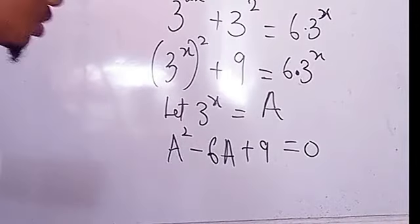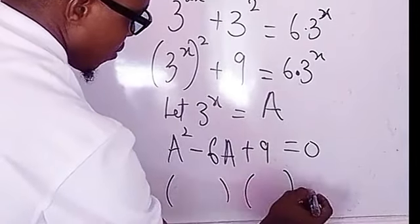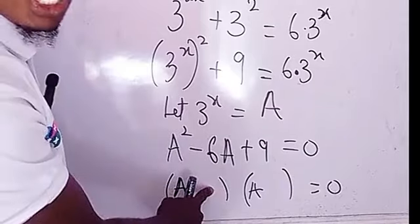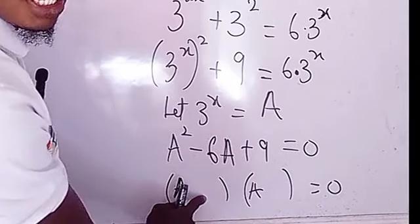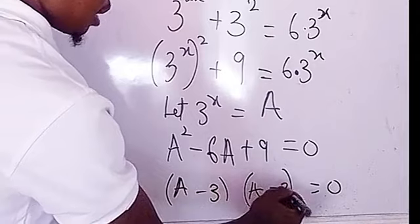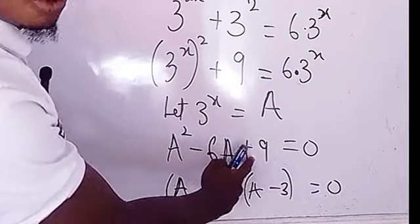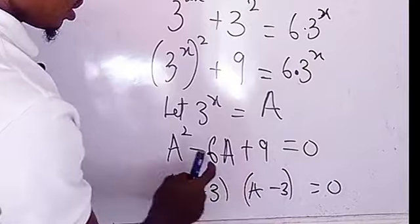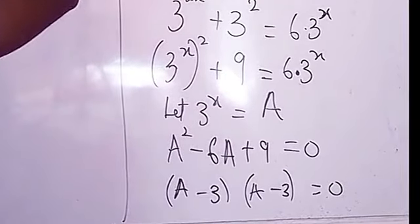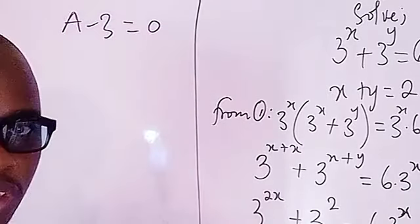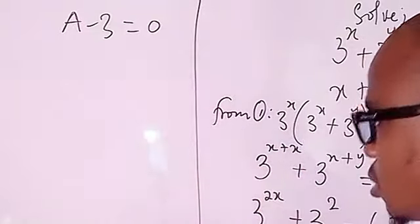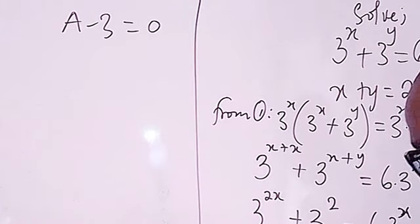Now let's factorize this. We have a squared minus six a plus nine equals zero. We need two numbers that multiply to give plus nine and add to give minus six. That's minus three and minus three. So we have (a minus three)(a minus three) equals zero, which means a minus three equals zero.